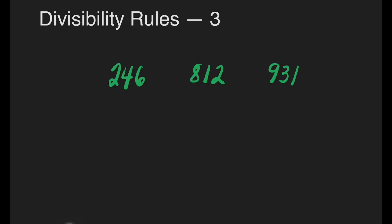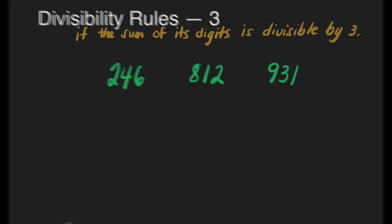Let's start with divisibility rules for 3. Which of these 3 numbers — 246, 812, and 931 — are divisible by 3? If the sum of its digits is divisible by 3, then that number is divisible by 3.